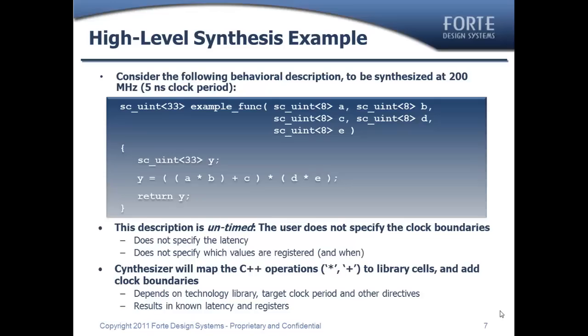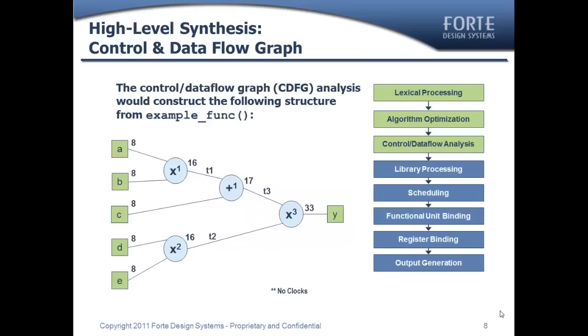So let's take a look at a concrete example. In this case, we have a very simple function in C++ that we want to synthesize to a particular technology at 200 MHz — i.e., a 5 ns clock. This design is completely untimed: it doesn't specify a latency, doesn't specify which values are registered. All it says is here's the arithmetic to be performed. Synthesizer will map all of the C++ operations — the star and the plus — to various functional units or library cells, and add the relevant clock boundaries to minimize area. The first thing it'll do is build this control and data flow graph, as shown on screen.